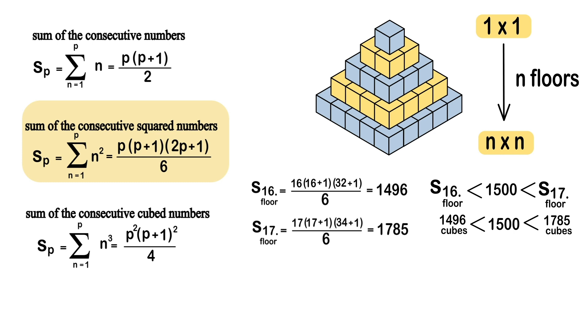Therefore, the highest possible pyramid we can build is one with 16 floors, and for that we'll need 1496 cubes.